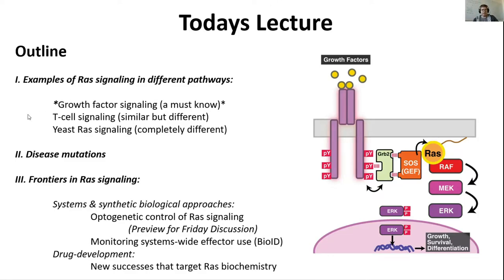Now that you've seen a little bit about the different ways in which mutations in RAS can cause disease, and how we still don't fully understand why some of those mutations are so consequential in certain cells but not others, you'll see why there's still a lot of really interesting questions about RAS signaling and RAS biology to understand. This is a great segue into the last portion of this lecture, in which we discuss the frontiers in RAS signaling — questions people are trying to answer, and some of the interesting techniques and approaches that people are using.